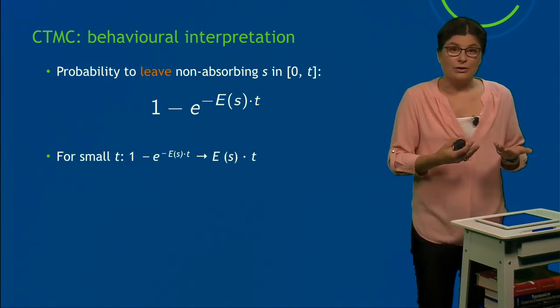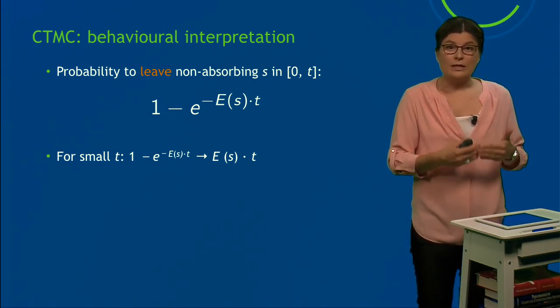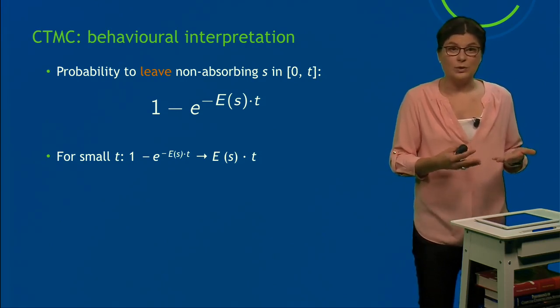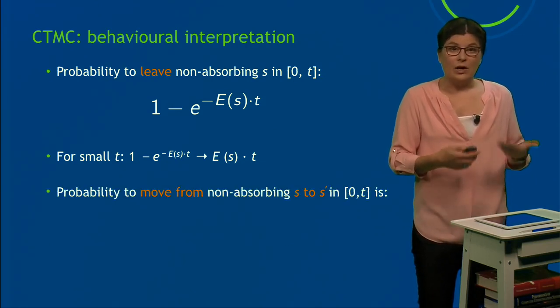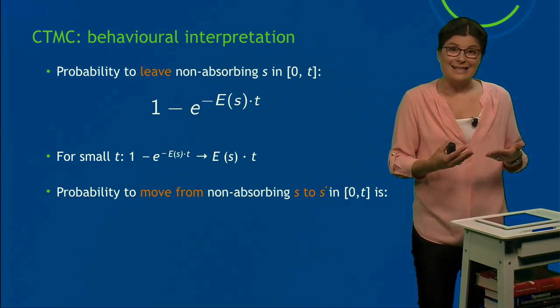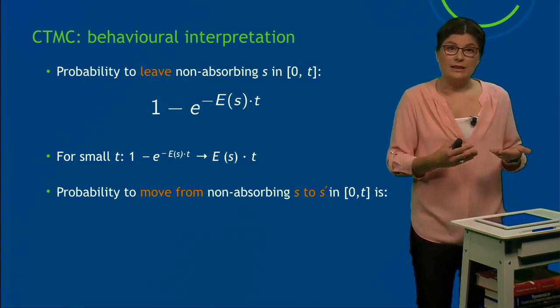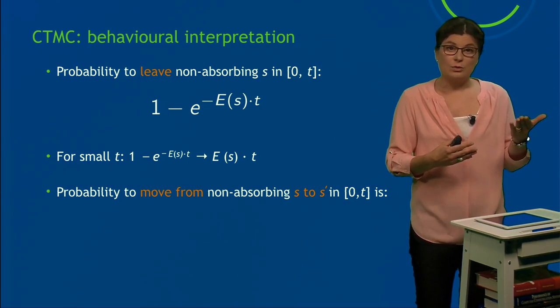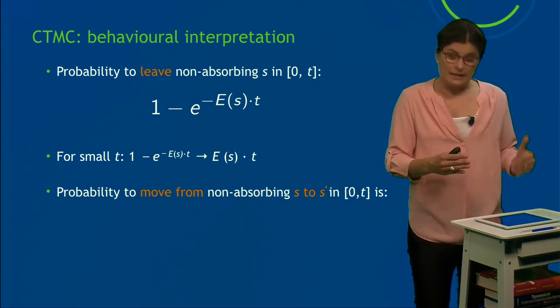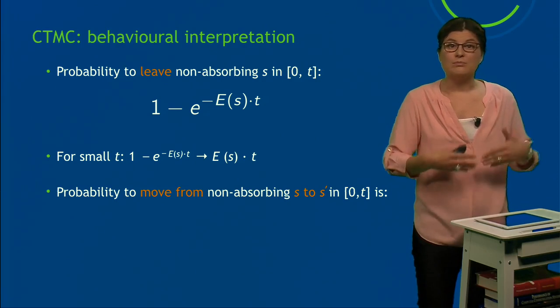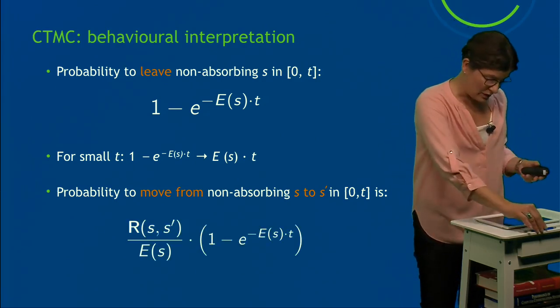Now, if the time interval is very small, we can make things easier and write E(s)·t instead, but that only works for really small t. On the other hand, what is the probability to move from a non-absorbing state s to another state s' in the time interval [0, t]? You see the difference, right? First, in the upper line, I want to have the probability to just leave the state—I don't care where I go. And now I want to have the probability to go to a state s' specifically.